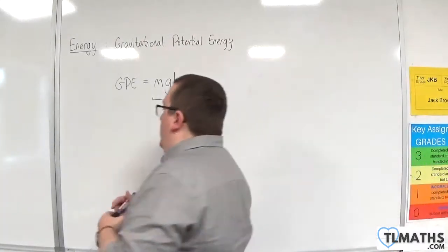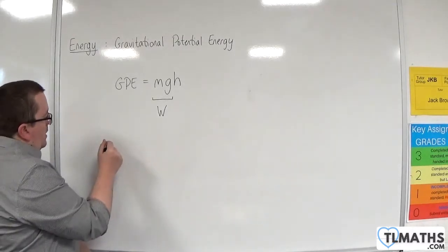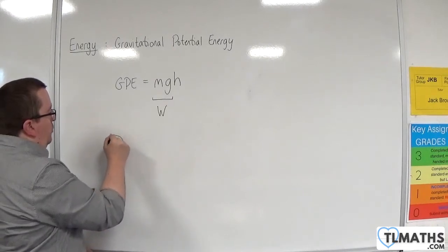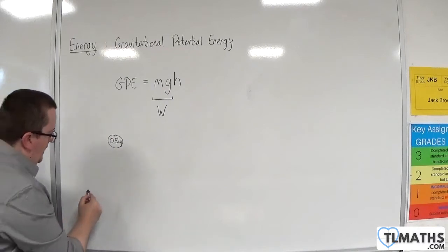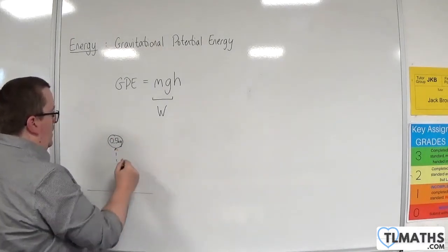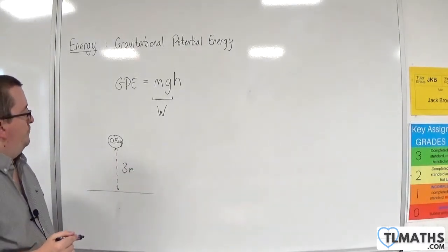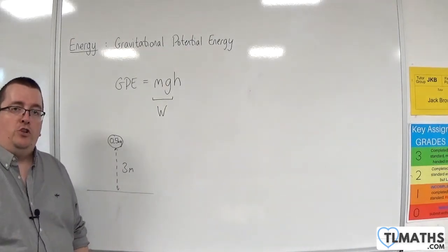So, let's say, for example, you have a ball which has a mass of 0.5 kilos, and it is, let's say, 3 metres above the ground. Calculate the gravitational potential energy.